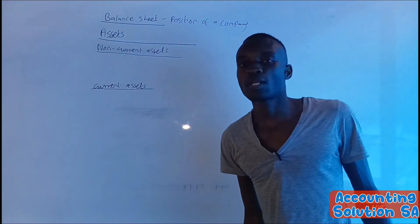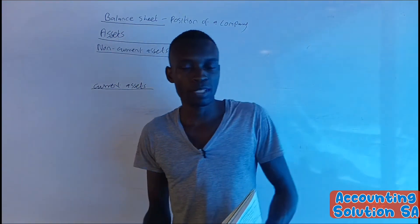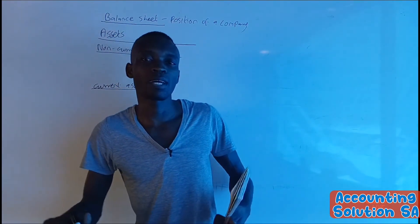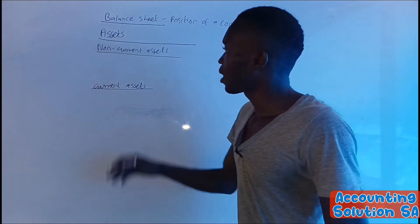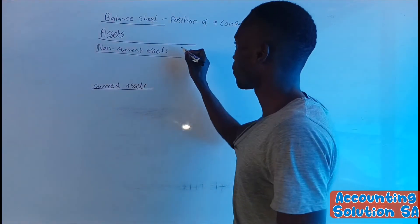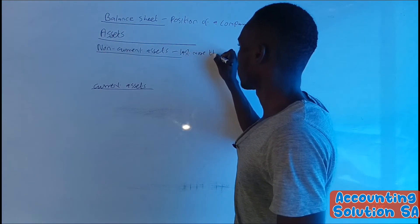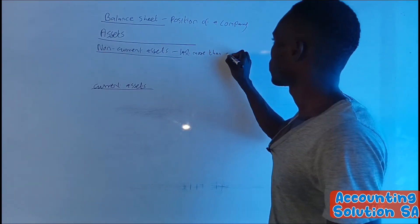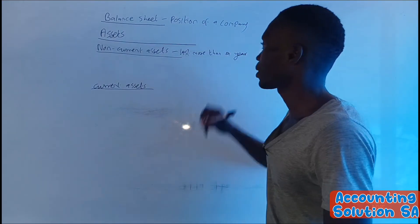Let's start with understanding what is the meaning of non-current asset. Assets in simple terms, we can say this is the item that is controlled or owned by the business. Non-current asset - we are talking about an asset that is going to last more than a year, more than a year, or you can say 12 months. This is an asset that is going to last for a long time.